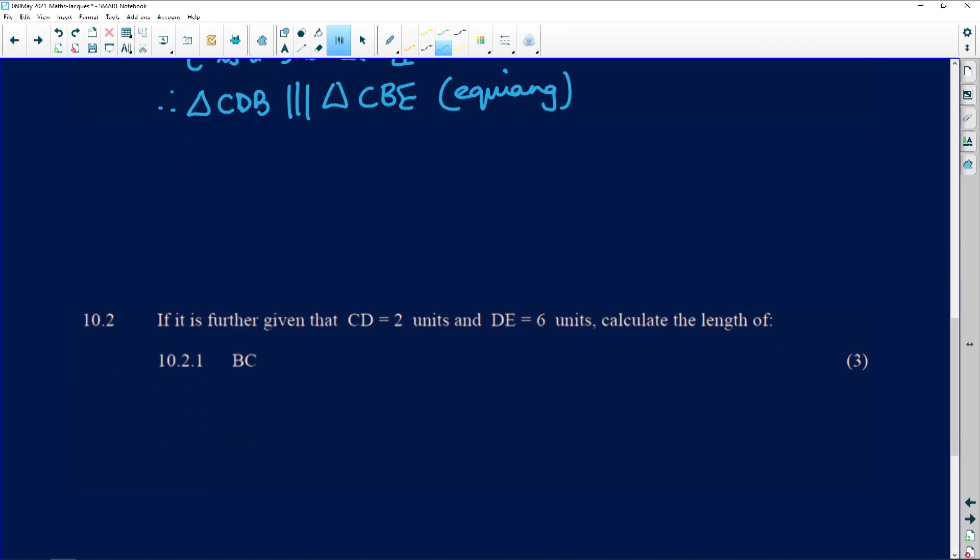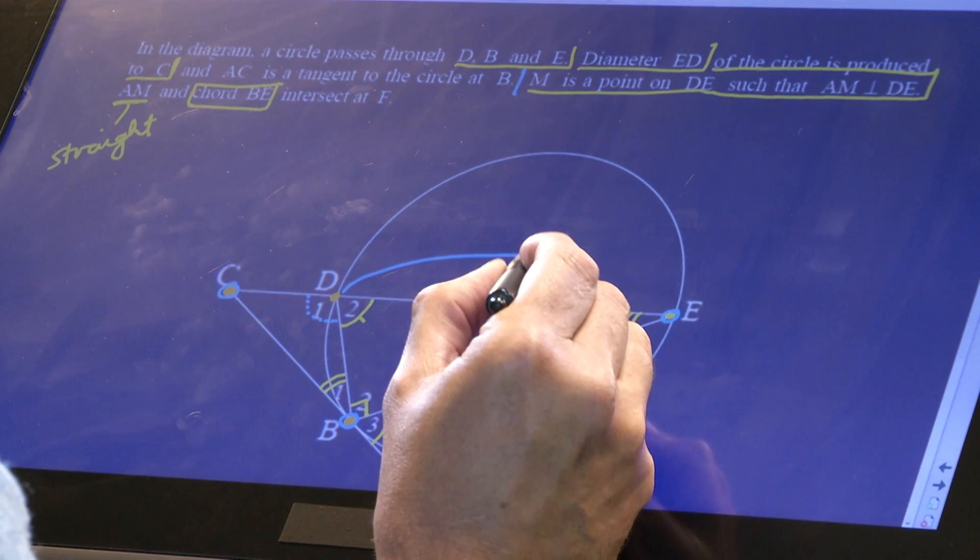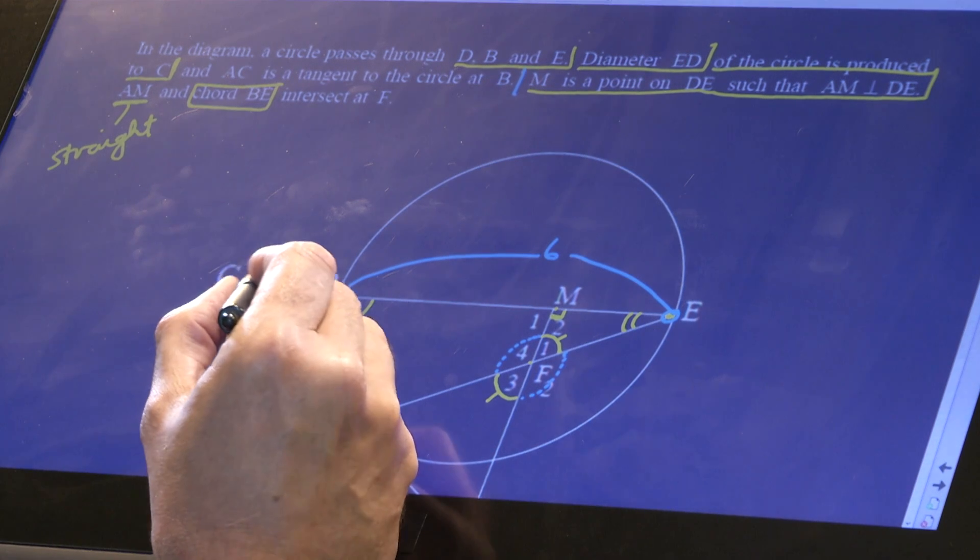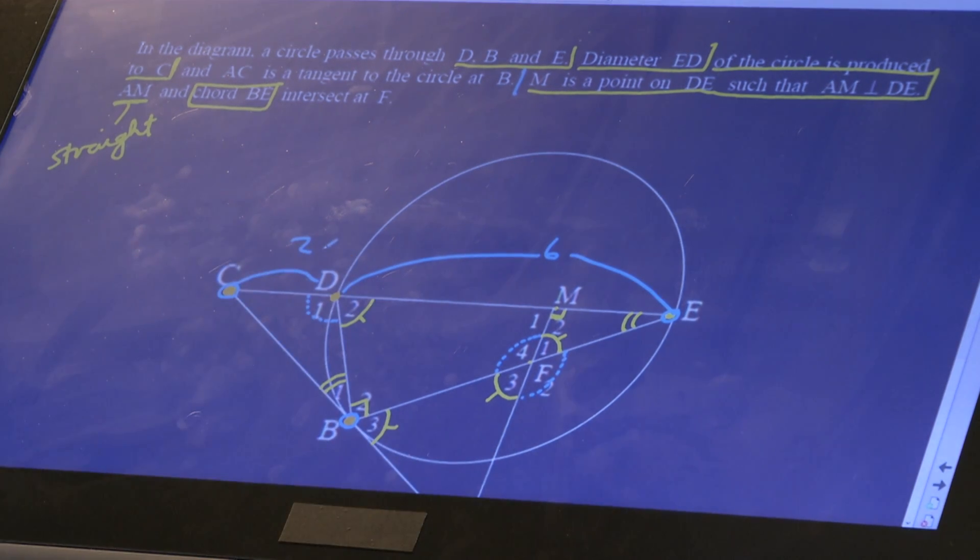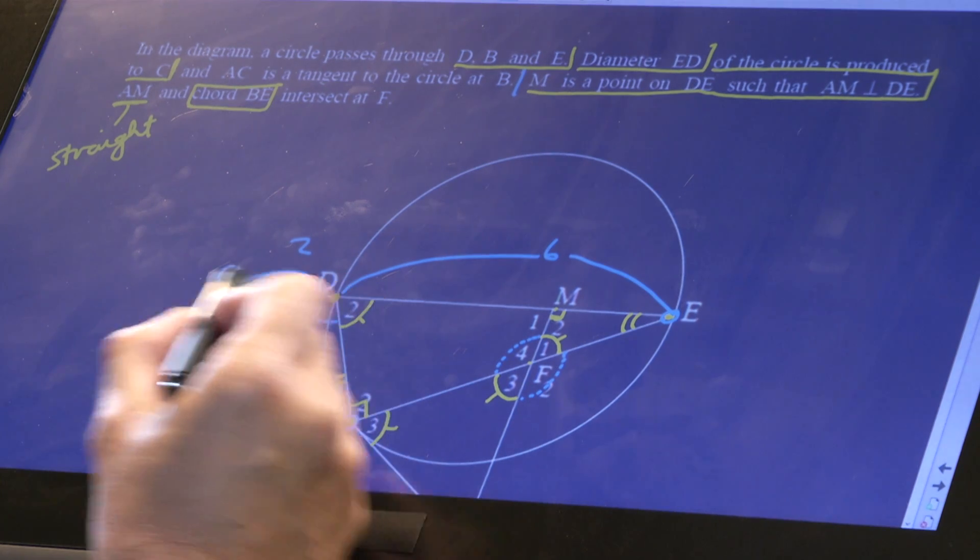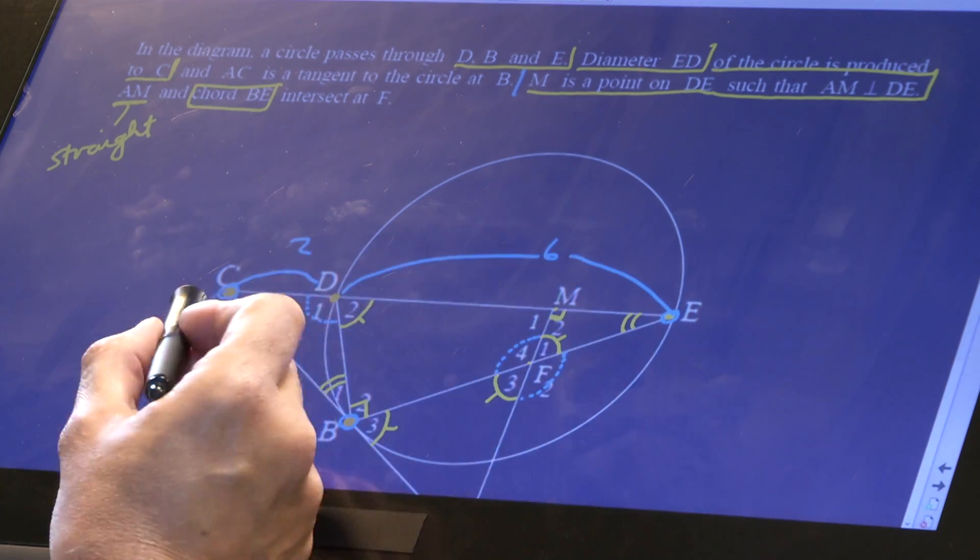The next section, 10.2, says: if it is further given that CD is 2 units and DE is 6 units, calculate the length of BC. So let's go back to our diagram. CD is 2, DE is 6. DE is 6 here, from there to there is 6. And they told us that CD, which is this part here, is 2. Now you can see that these things lie across triangles. So CD only belongs here, and CD belongs to the whole big triangle.